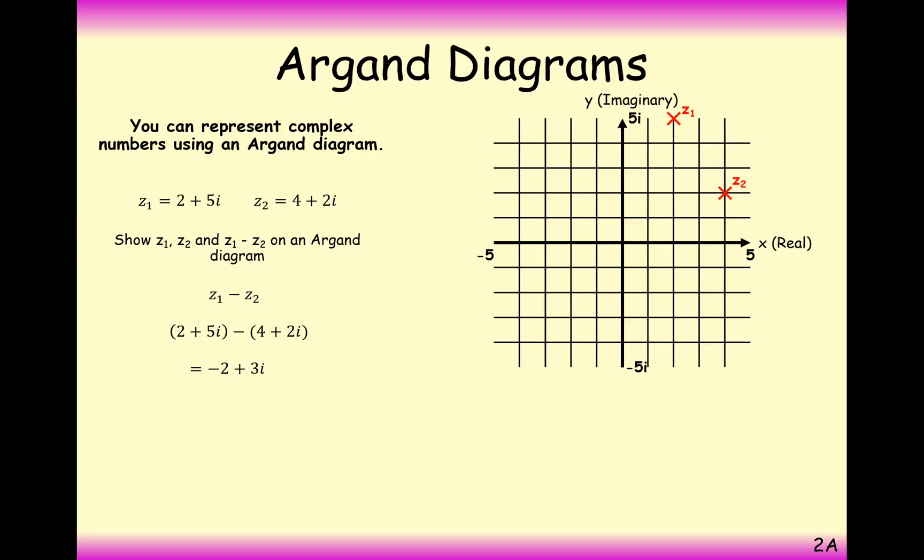And plotting these on an Argand diagram, we get this situation here. So we've got 2 plus 5i up here, 4 plus 2i over here, and minus 2 plus 3i over here.